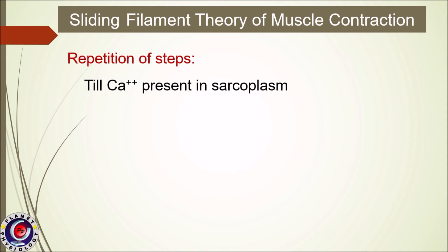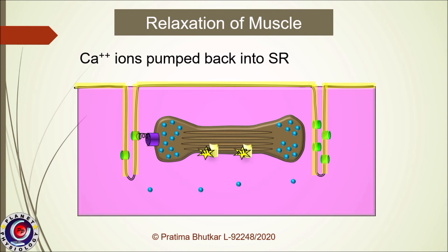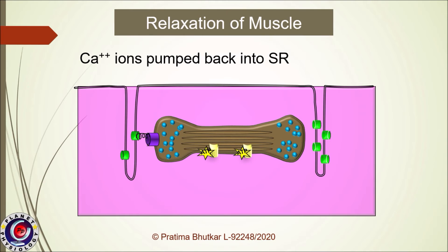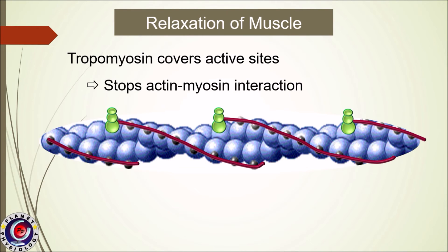Let us see how these events come to an end and the muscle relaxes. Once the action potential is over, calcium pumps will pump calcium ions back into the sarcoplasmic reticulum. As calcium concentration in the sarcoplasm lowers, there is no calcium available to attach to troponin C. As a result, tropomyosin moves back to its original conformation and covers the active sites, actomyosin interaction stops, and the muscle relaxes.